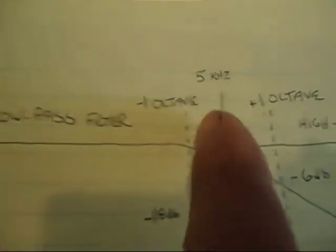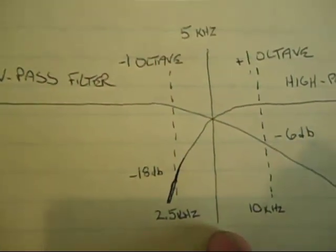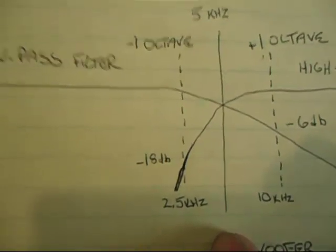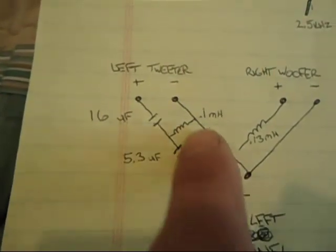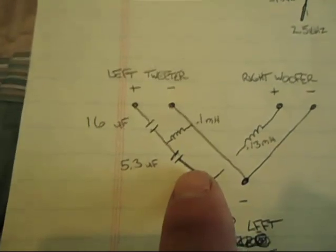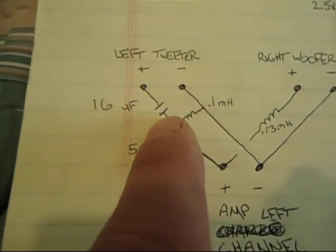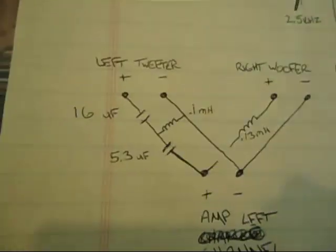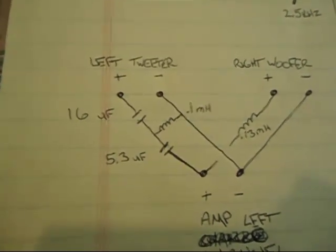Alright, so I'll explain this. I have my crossover point at 5,000 hertz. On my tweeter I have one, two, three components—that's an 18 decibel per octave slope.